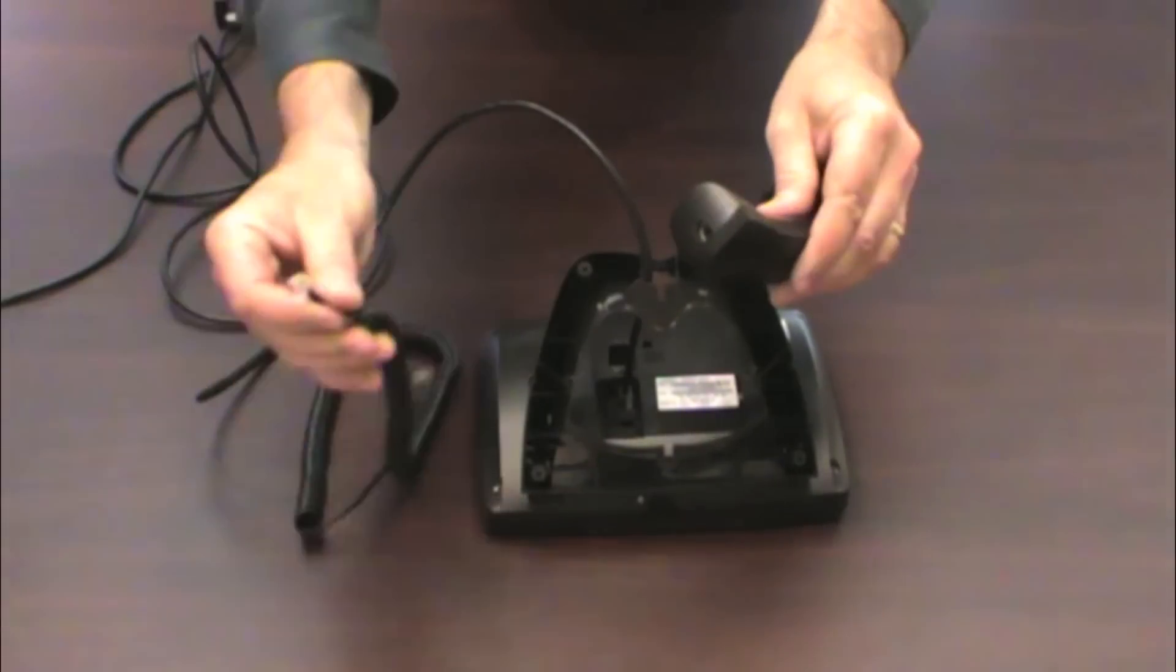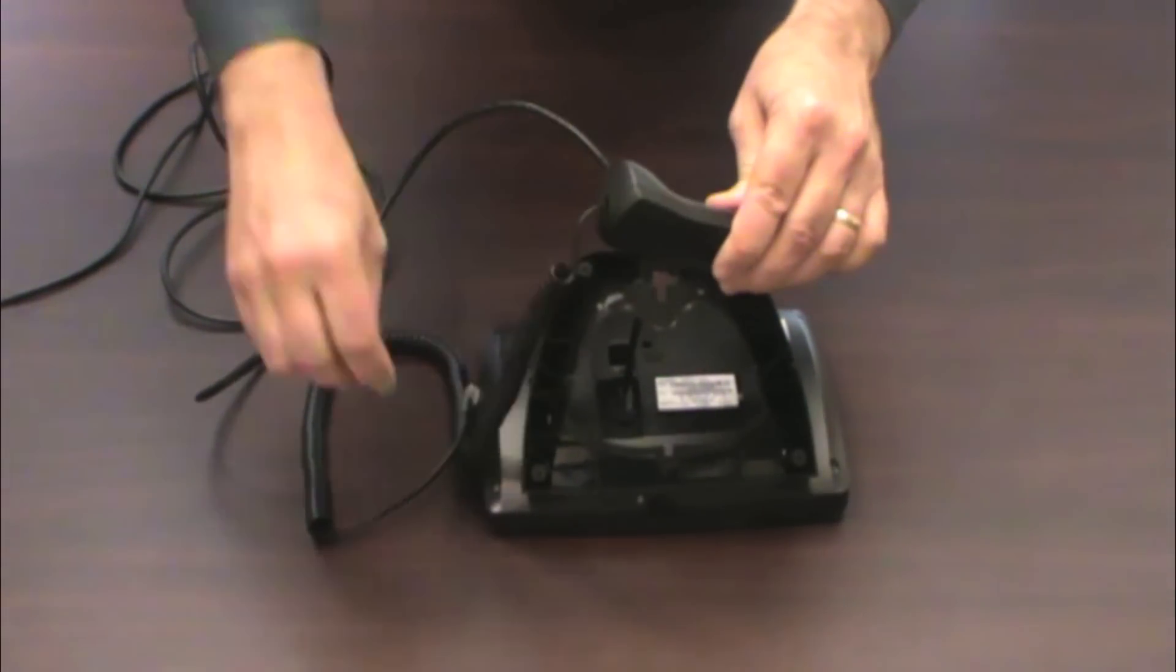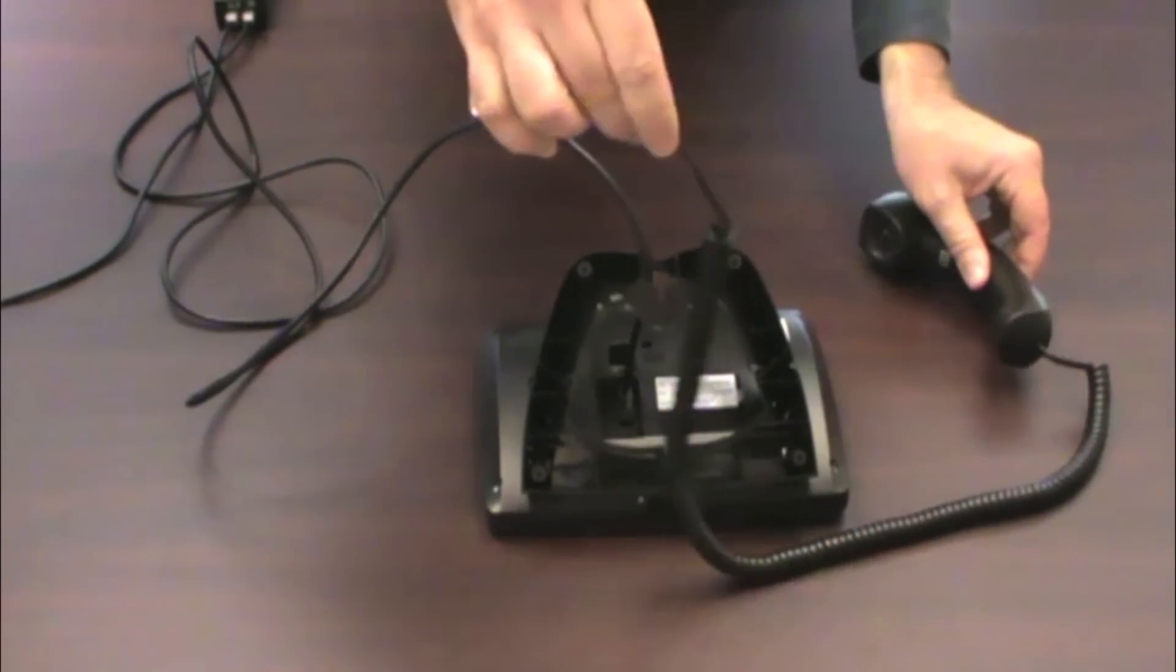Connect the cord to the handset by connecting the short end of the cord into the handset and the long end into the phone.